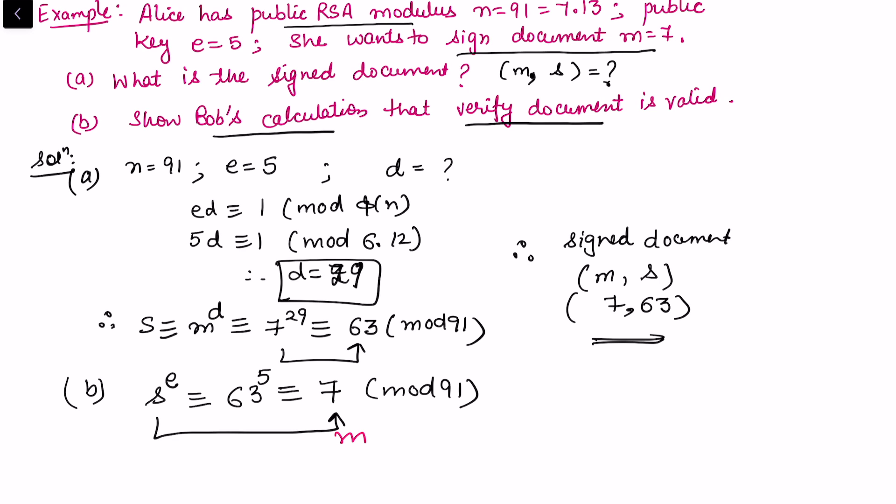m equals 7 ensures that the signature is valid. So this simple process explains the concept of digital signature.